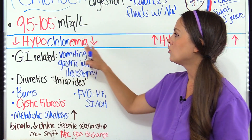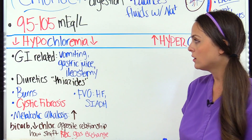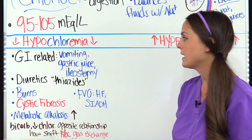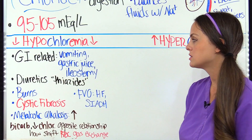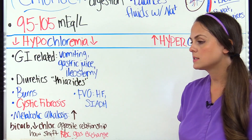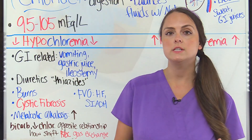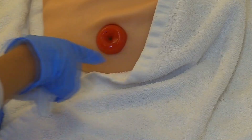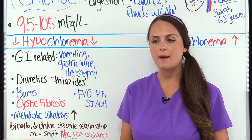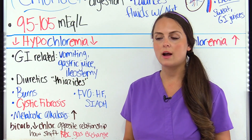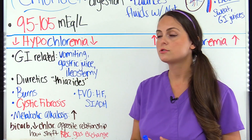Now let's look at hypochloremia — this is where we have low blood levels of chloride. Some main causes are typically GI-related, where the patient is losing a lot of chloride through vomiting, gastric suction, or if they have an ileostomy. An ileostomy is a surgical procedure that brings the small bowel to the surface of the skin, and the effluent is rich in sodium and chloride, so putting out a lot of effluent can cause these levels to drop.